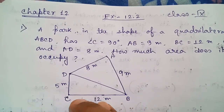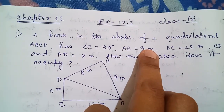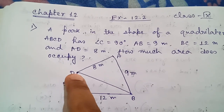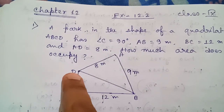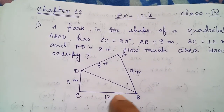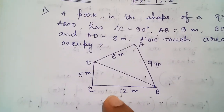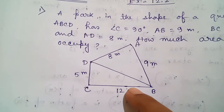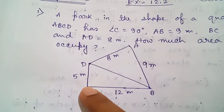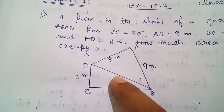I have drawn the figure according to the question and I have joined the BD diagonal. Why BD diagonal? Because if we join BD diagonal then we easily get this part as a right triangle, and we all know that a right triangle's area is very easy to find. So for this triangle it is very easy to find the area, but for the other triangle we need to find BD.